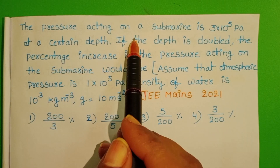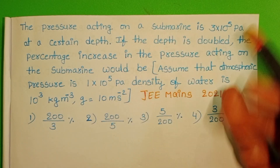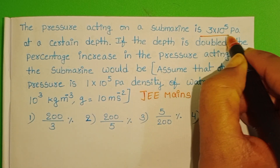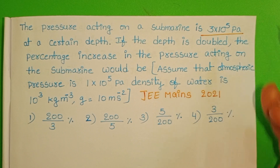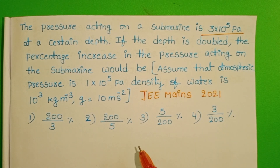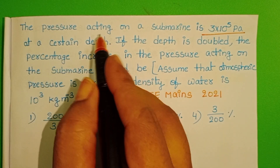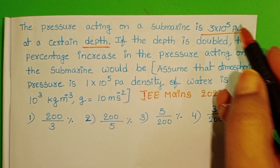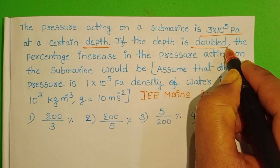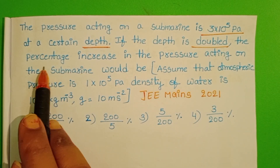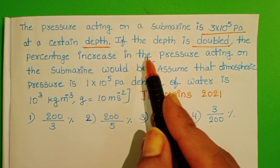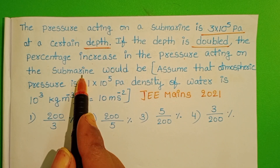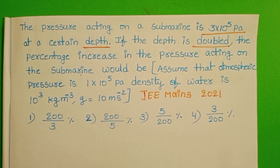The pressure acting on a submarine is 3 × 10⁵ pascal at a certain depth. If the depth is doubled, the percentage increase in the pressure acting on the submarine would be?